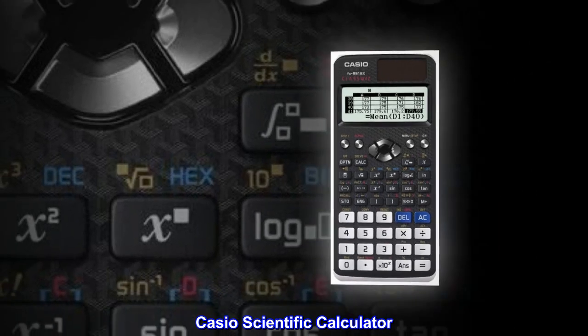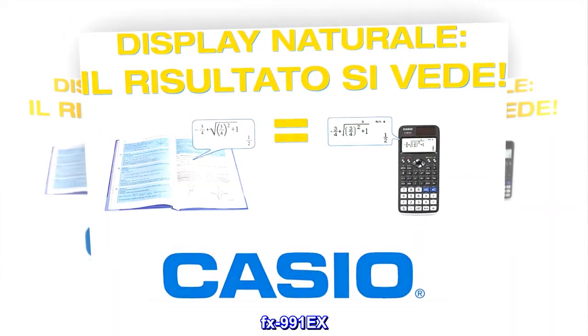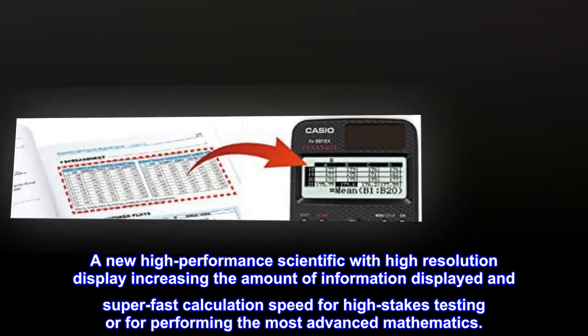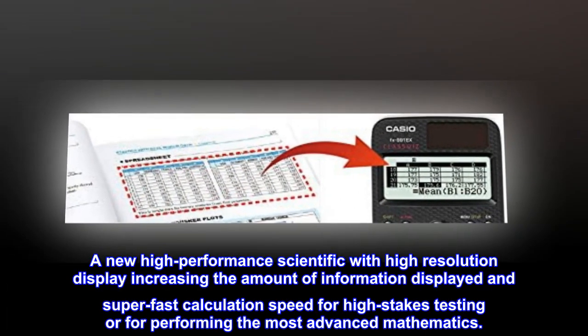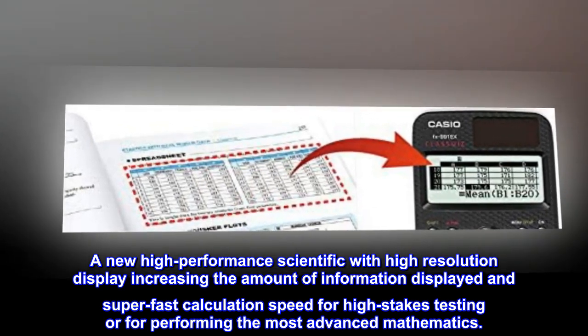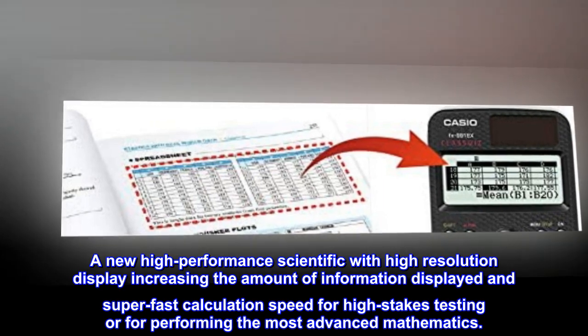Casio Scientific Calculator FX-991X. A new high-performance scientific with high-resolution display increasing the amount of information displayed and super-fast calculation speed for high-stakes testing or for performing the most advanced mathematics.